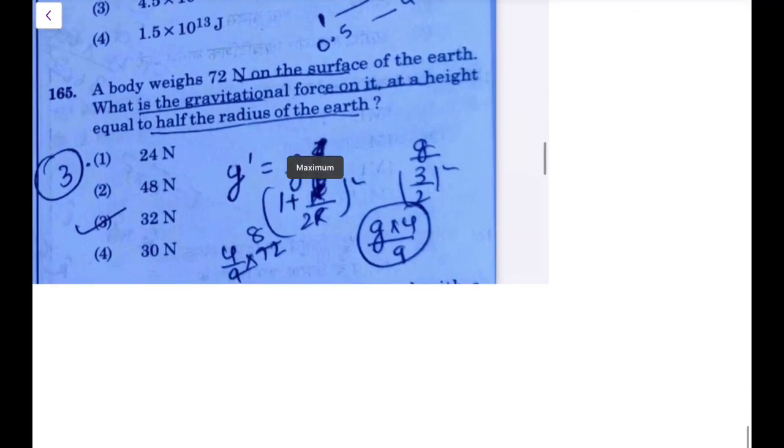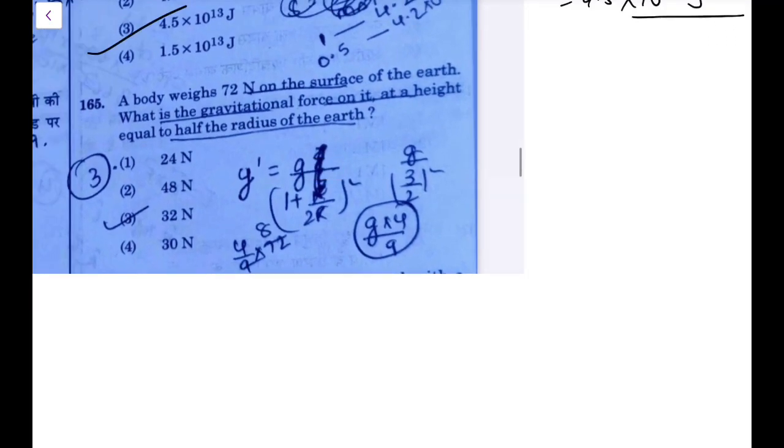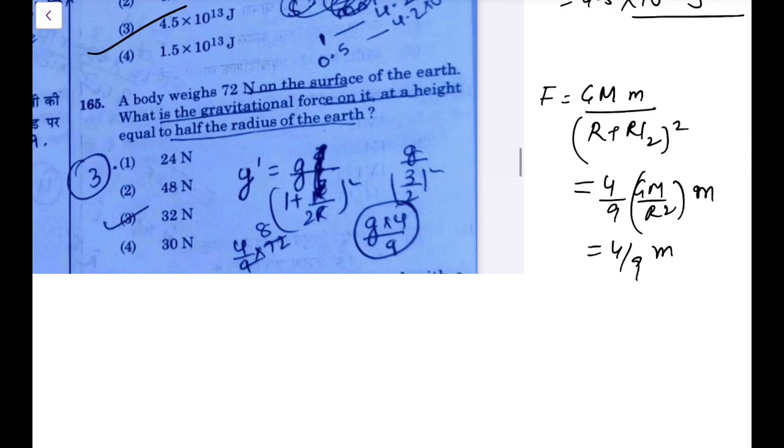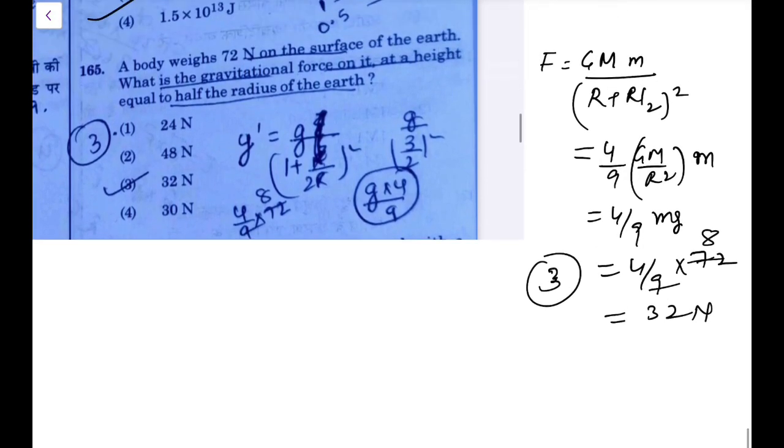Next one: body is weighing 72 Newton on the surface of the earth. What is the gravitational force at a height equal to half the radius? At half the radius, f will become g m m upon r plus h, that is r plus r by 2 whole square, which comes out as 4 by 9 g m by r square into m. That would be equal to 4 by 9 of m g, that is 4 ninth of the weight. 4 by 9 into 72, 9 times 8 are 72, 8 times 4 are 32 Newton. This is third option that is correctly being marked here. These are the next five.